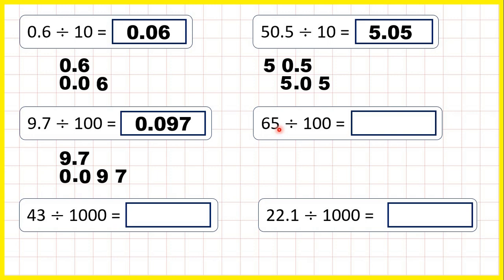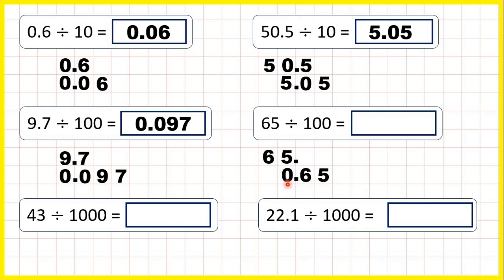Now we have a whole number: 65 divided by 100. Remember, there's really an invisible decimal point on the end of every whole number, so we can write 65 with our decimal point on the end. Then we copy down the decimal point. We're dividing, so the number's getting smaller, which means digits are moving to the right, and 100 has two zeros, so we need to move the digits two squares. If we copy this 5 down two squares to the right, and do the same with this 6, we get 0.65. We need to write a 0 in our empty ones square, so we have 0.65 as our answer.